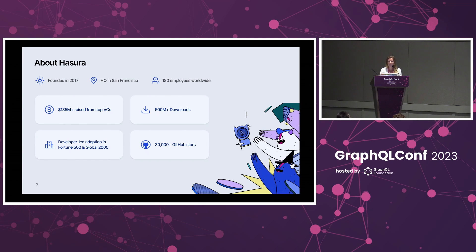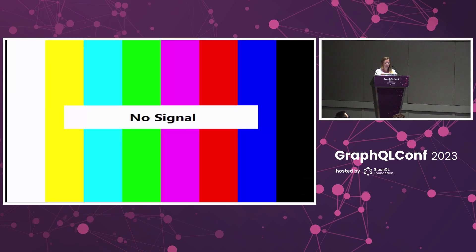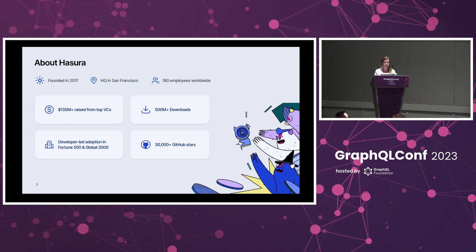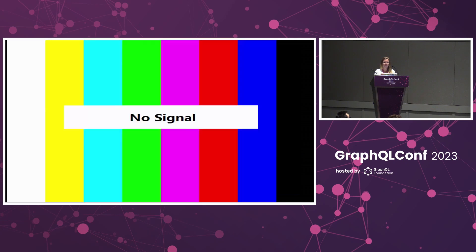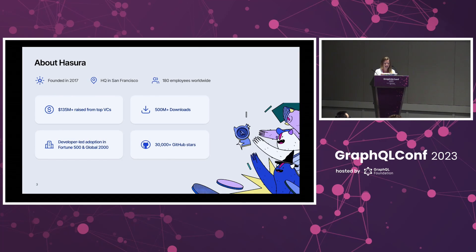I'm working at Hasura. Hasura was founded in 2017. Our headquarters is here in San Francisco, so if you have some time, stop by and say hi. We have a pretty large open source community because the core of Hasura is open source, which is one of the reasons I joined more than four years ago.